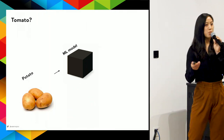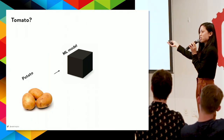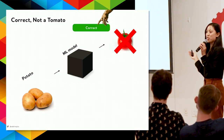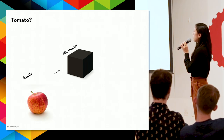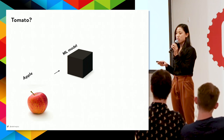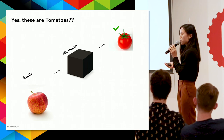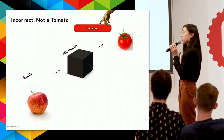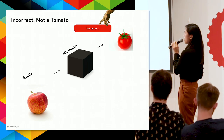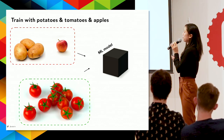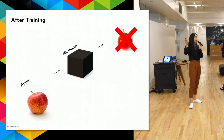Now let's feed it a potato image. Does it know a potato is not a tomato? Correct. But let's feed it something it hasn't seen — an apple. Does our model, trained only on potatoes and tomatoes, think this is a tomato? Quite possibly, since it's red and round. So our 'hand of God' comes in and says: no, apples are not tomatoes. We retrain, feed the apple again, and — correct, an apple is not a tomato.